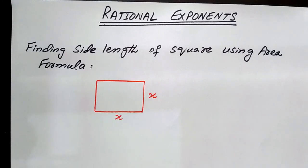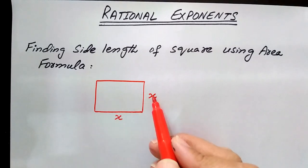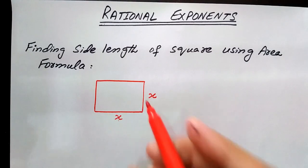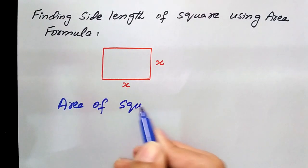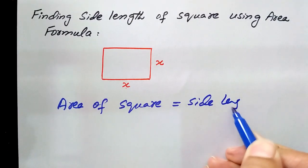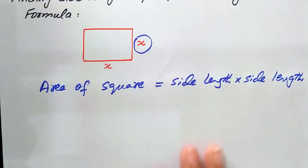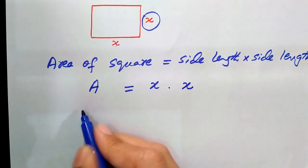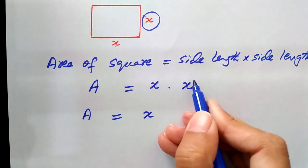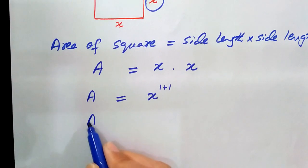First we are going to find the side length of a square using the area formula. This square has side lengths both represented by x. Area of a square equals side length multiplied by side length, so A equals x times x. Using the laws of exponents, the exponents add: 1 plus 1, giving A equals x squared.